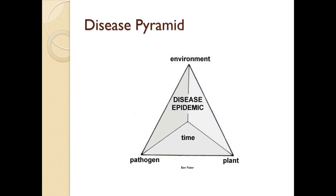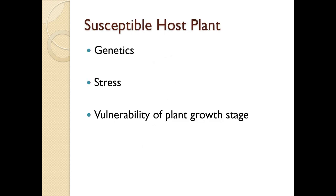We have the disease pyramid - you see the triangle quite often in literature. Time is added because infection can take two hours or nine hours depending on conditions. This is one reason we want to do any overhead watering in the morning, so the water has a chance to evaporate. A susceptible host plant may have genetics that make it prone to disease, stress is a major factor, and certain growth stages may be more vulnerable to the pathogen.